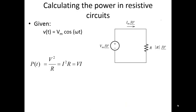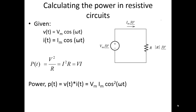If we take a look at some of our general equations, we know that we can use the power as V squared over R, I squared times R, or V times I. We have V times I, or Vm times Im, times the cosine squared of omega T.